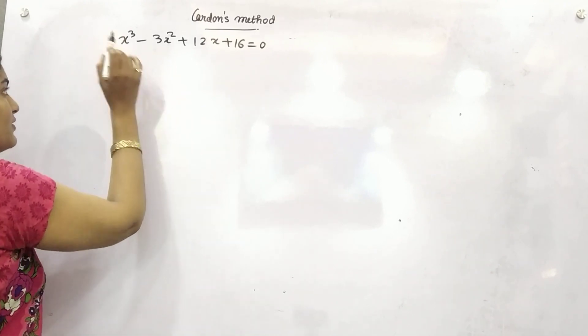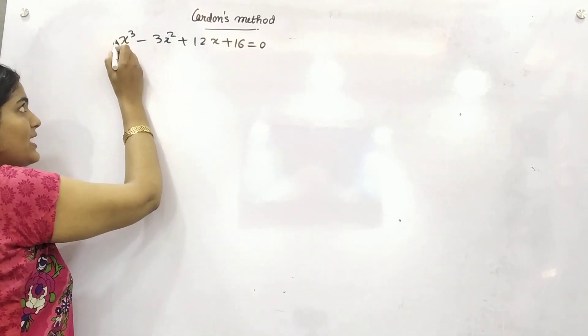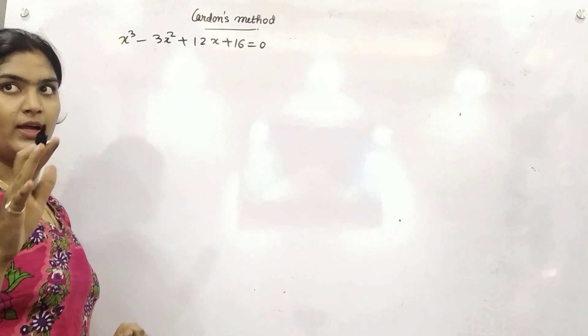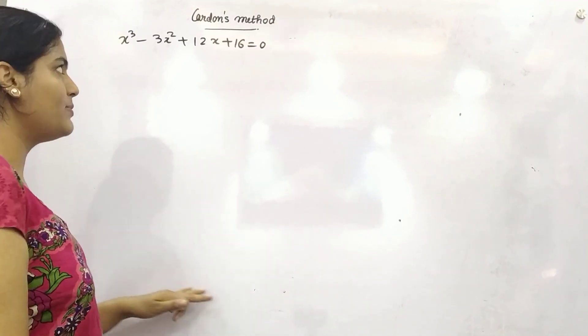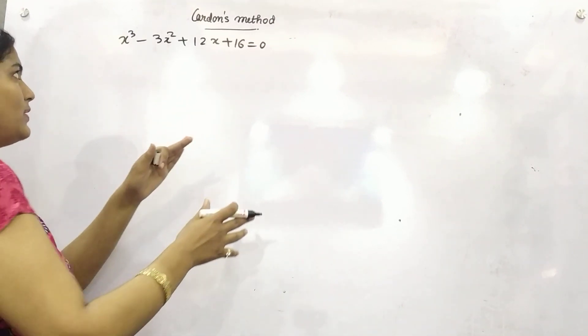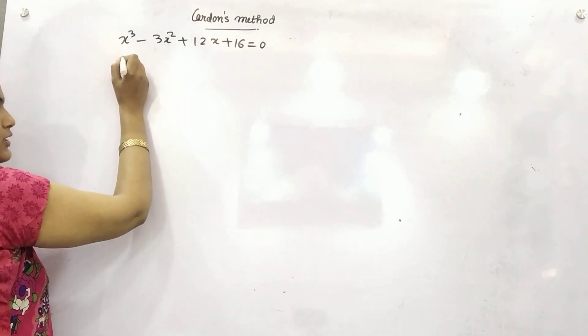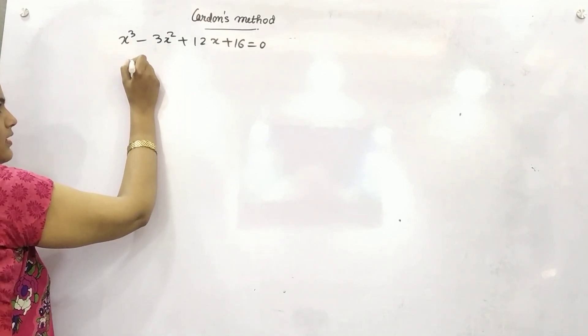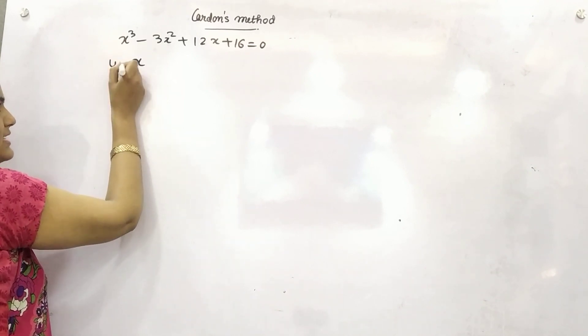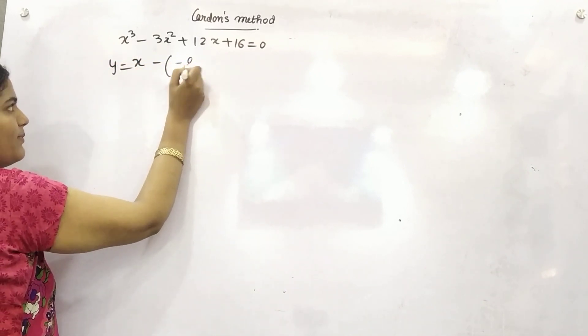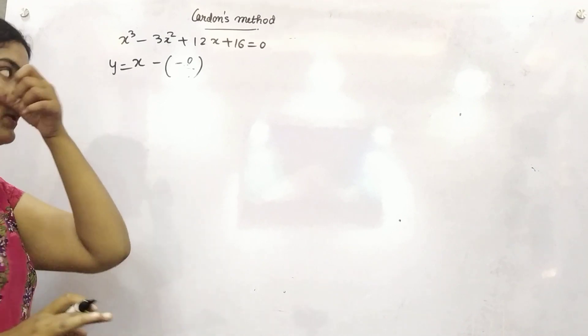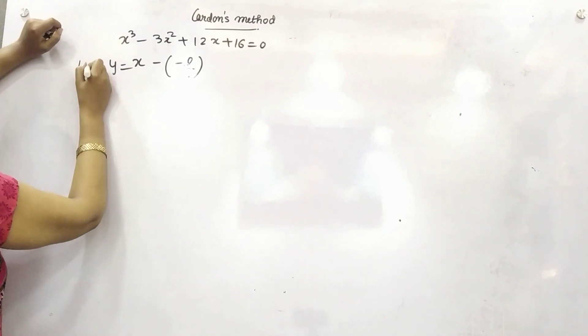This is your question and you know you can watch my last video so as to understand the steps but I'm reminding you about those steps in this video as well. So the first step is you need to make the coefficient of x cube as 1. So that work is already being done because it is given to us. Now your second step is to change: y is equal to x minus minus l by 3. This is your formula right?